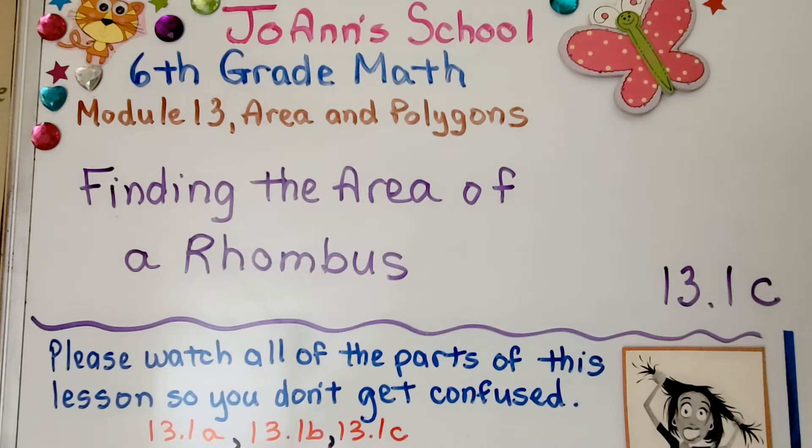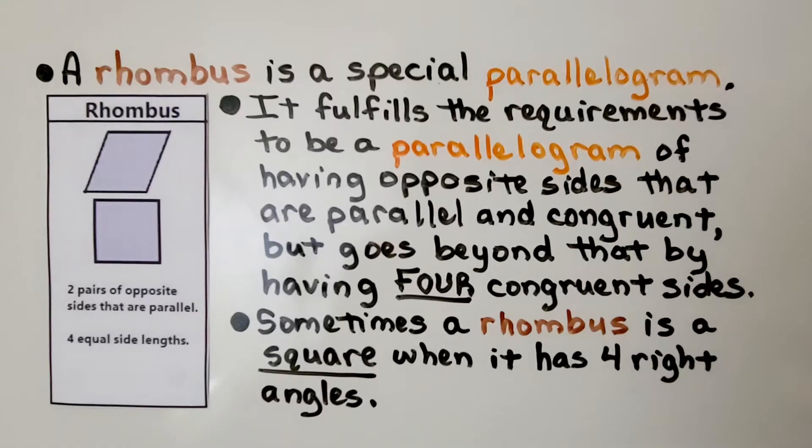Lesson 13.1c, finding the area of a rhombus. A rhombus is a special parallelogram. It fulfills the requirements to be a parallelogram of having opposite sides that are parallel and congruent, but goes beyond that by having four congruent sides.